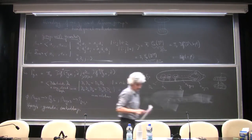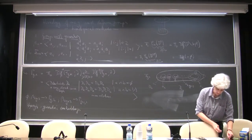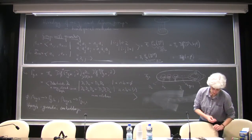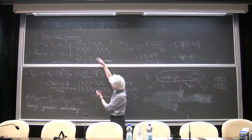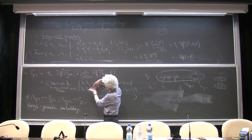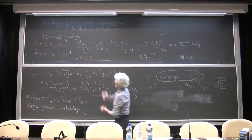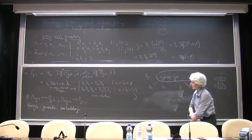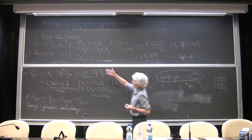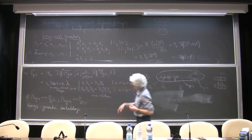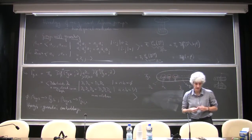Birman asked whether there are any non-geometric embeddings. Geometric, because these braid relations which we have from the Dehn twist just map right there — and the question was, are there any other maps from the braid group into the mapping class group which are not given by something like that?